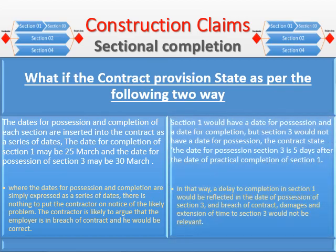In the second case, the contract provisions state that section one would have a date for possession and a date for completion, but section three would not have a fixed date for possession. Instead, the contract states that the date for possession of section three is five days after the date of practical completion of section one. In that way, a delay to completion of section one would be reflected in the date of possession of section three, and breach of contract, damages, and extension of time claims relating to section three would not be relevant.